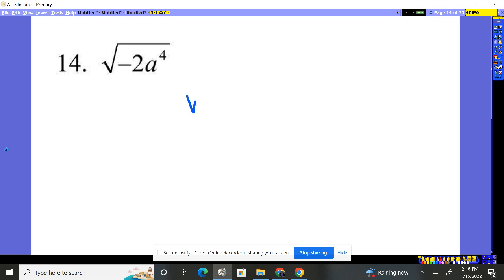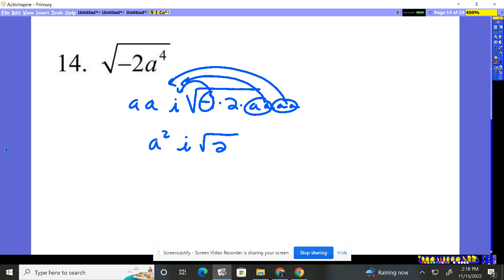Here we have a negative 2, so we know this is negative 1 times 2 times a, a, a, a. Okay, negative 1 is coming out as an i. You have an a coming out, you have another a coming out. So you're just left with a squared i root 2.